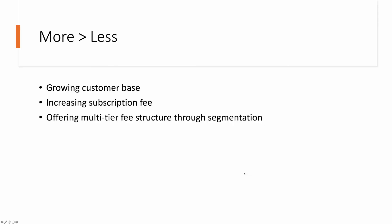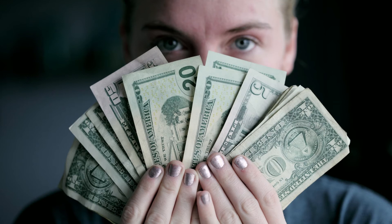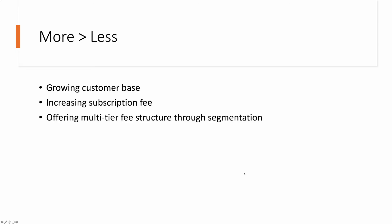The third element of CLV is that more money is better than less money. This dictates three business strategies. In order to increase the company's revenue, you can grow the customer base, you can increase the subscription fee per customer, or as discussed extensively in this course, you can offer a multiple-tier fee structure through segmentation, offering different prices to different types of subscribers.